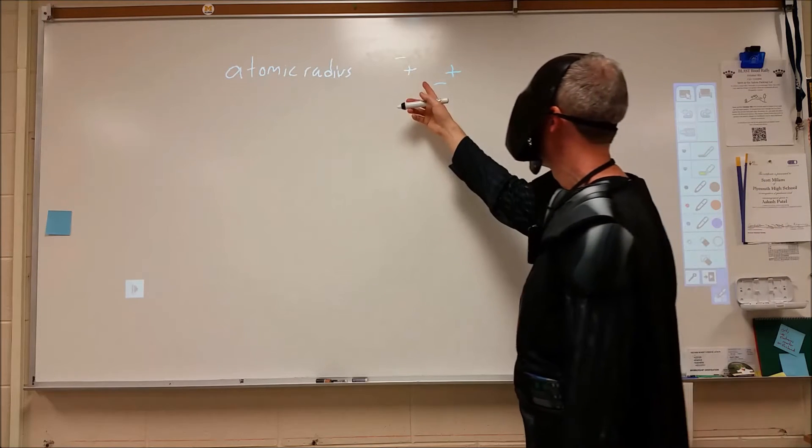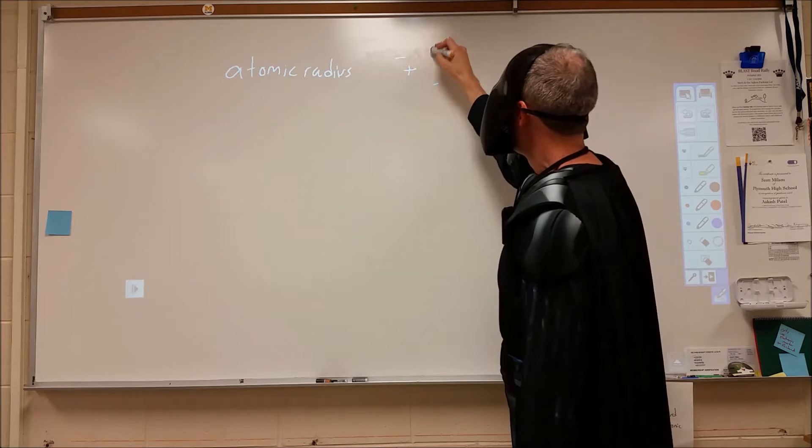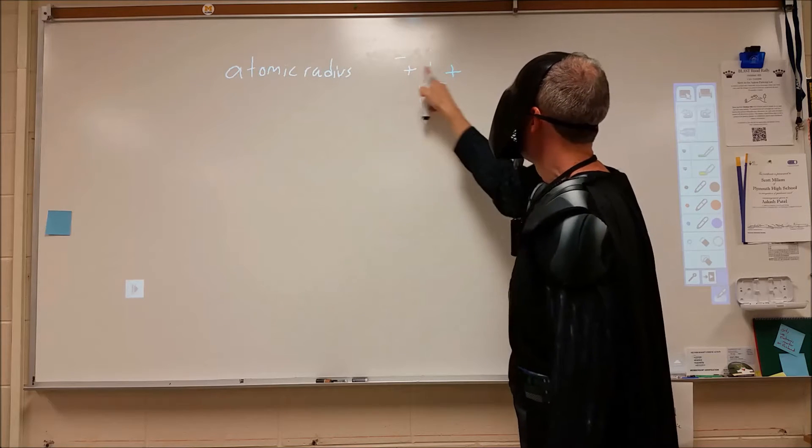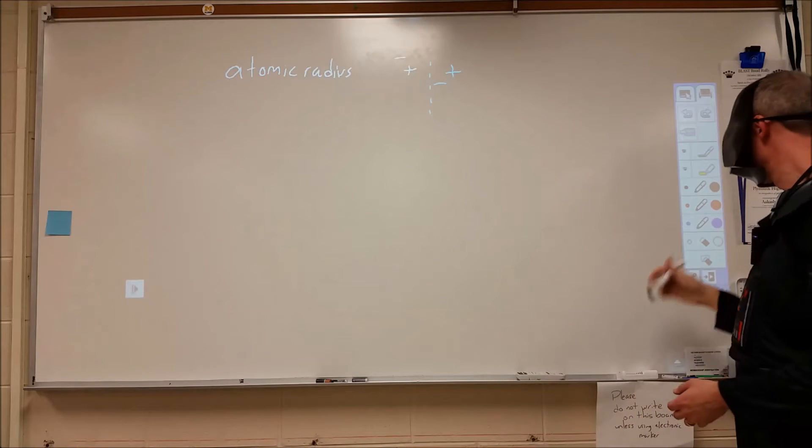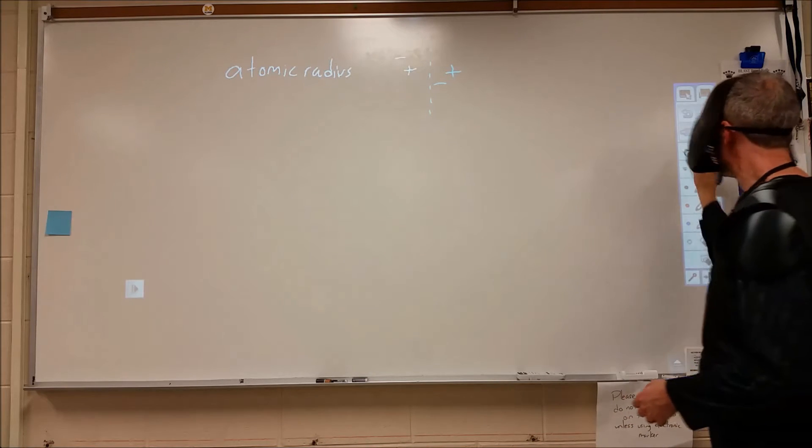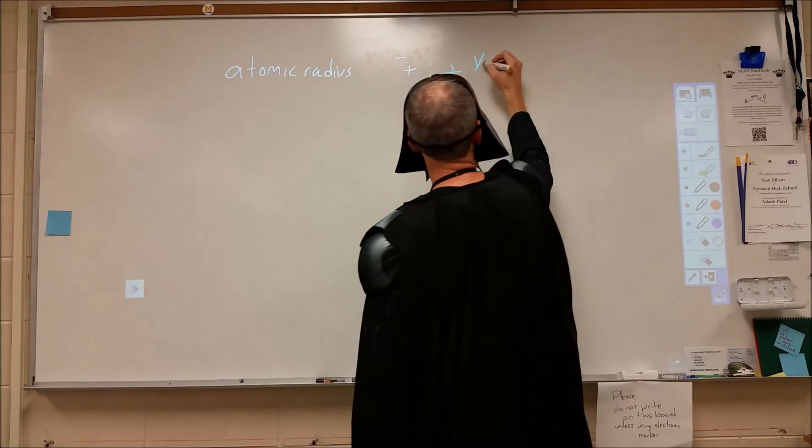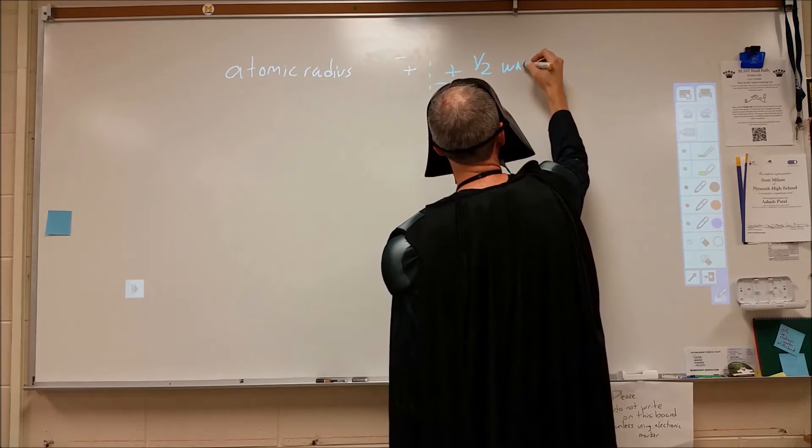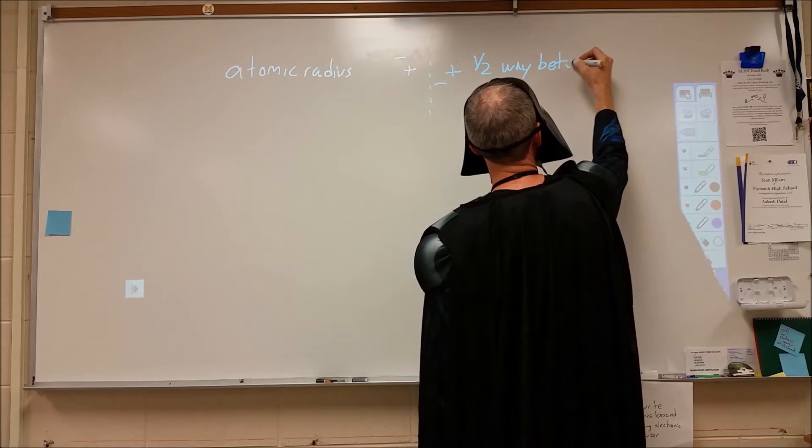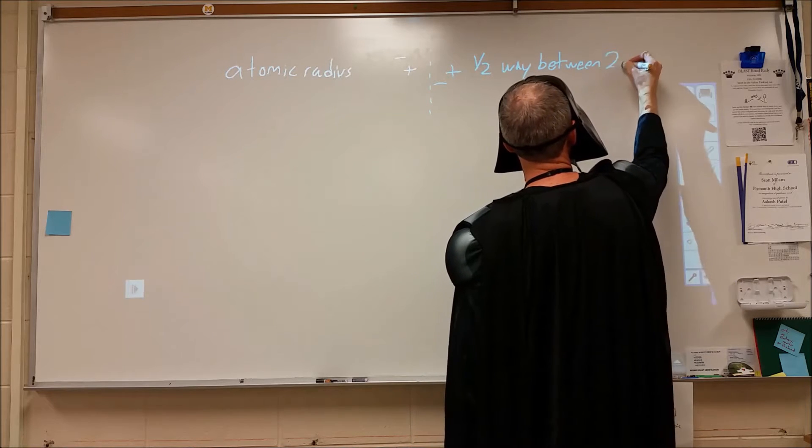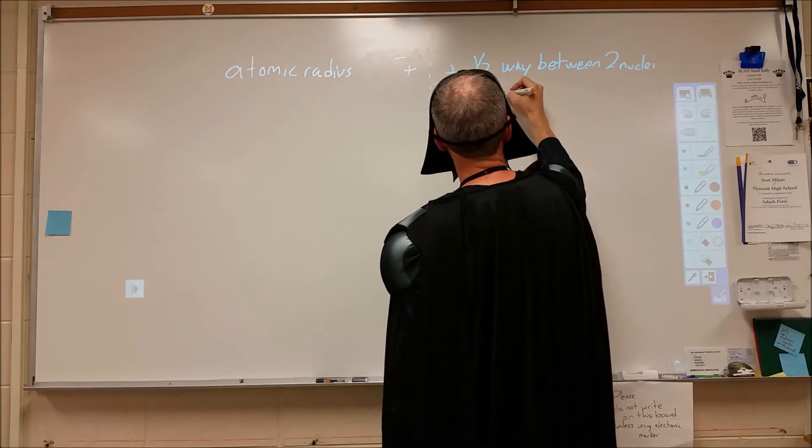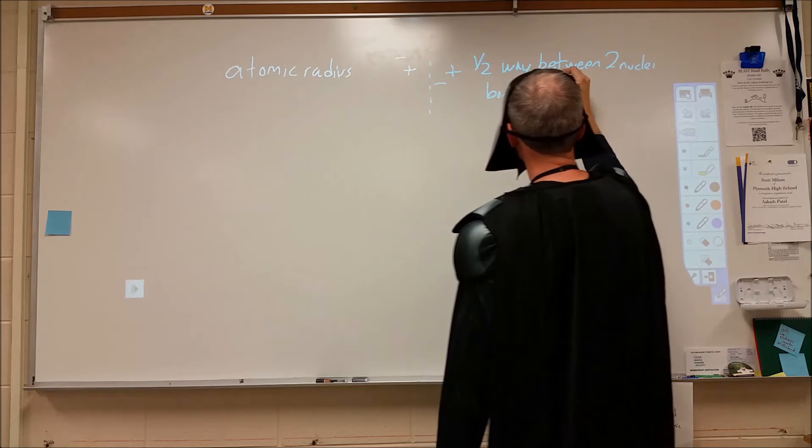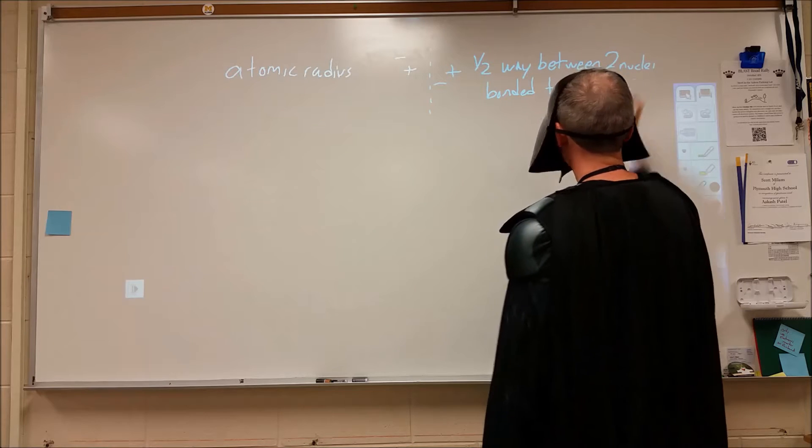So here we've drawn an H2 molecule. We would say that halfway between the protons of those two hydrogen atoms would be the radius of the hydrogen atom. Halfway between the two nuclei that are bonded together is our definition of atomic radius.